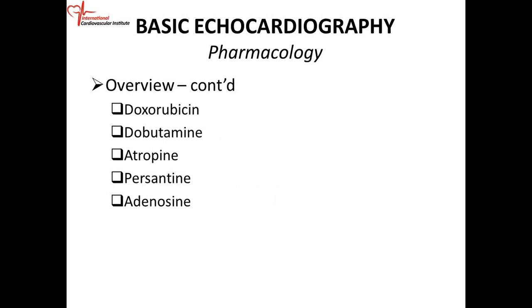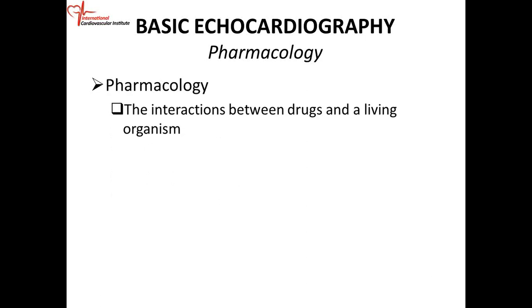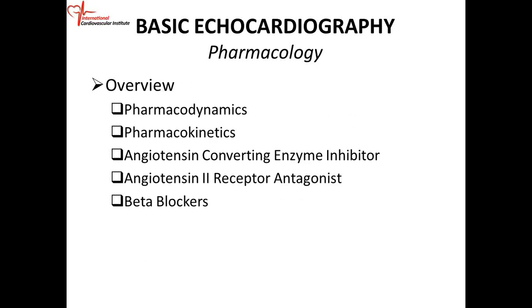We're going to look at some chemotherapeutic agents, only because they affect cardiac muscles — the doxorubicin and adriamycin group of chemotherapies. Dobutamine, which we use to do stress tests, atropine, persantine, adenosine. And we're going to look at medications used in conscious sedation, such as midazolam, valium, ketamine, and morphine.